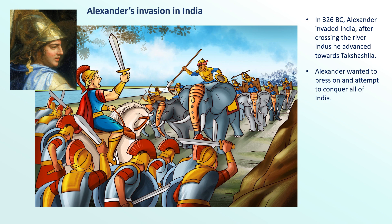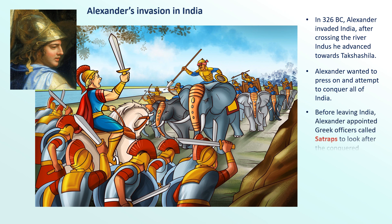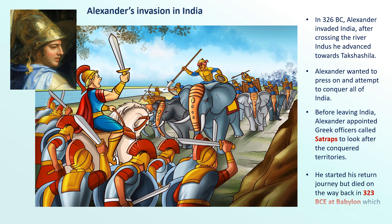The soldiers were probably feeling homesick and tired of fighting. Before leaving India, Alexander appointed Greek officers called Satraps to look after the conquered territories. He started his return journey but died on the way back in 323 BCE at Babylon, which is in today's Iraq.